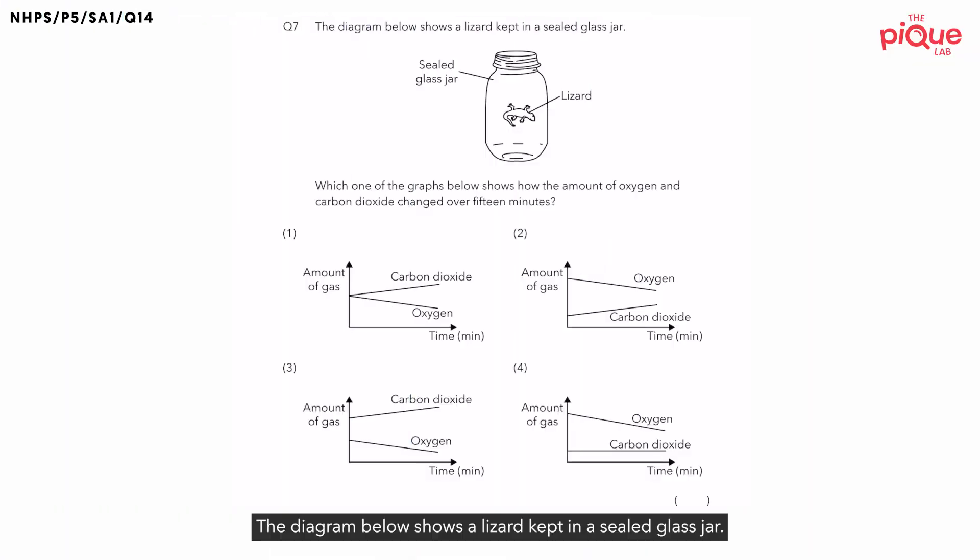Question 7. The diagram below shows a lizard kept in a sealed glass jar. And why do you think the question wants to tell you that the glass jar is sealed? This is because air from the surrounding cannot enter the glass jar. Therefore, air inside the glass jar cannot exit either. Which one of the graphs below shows how the amount of oxygen and carbon dioxide change over 15 minutes?